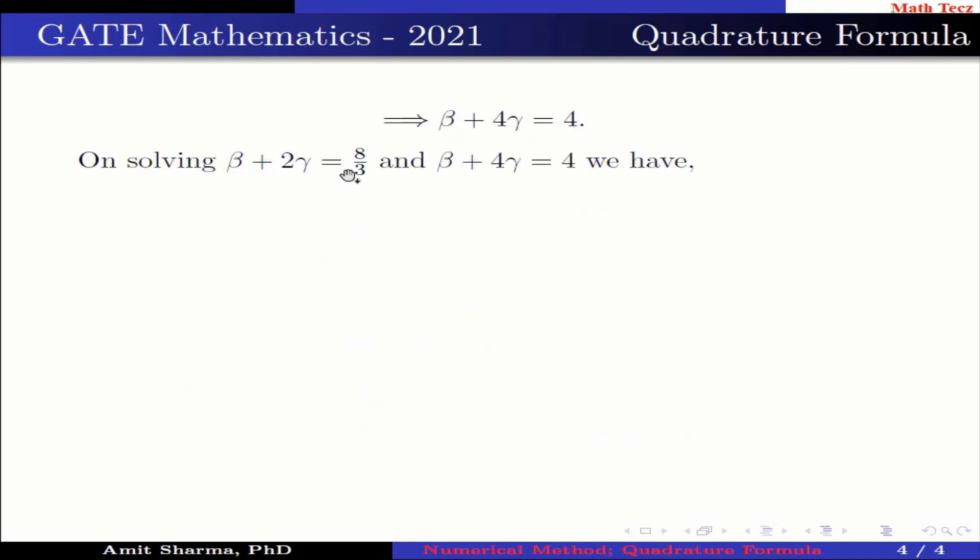On solving β plus 2γ equals 8 by 3 and β plus 4γ equals 4, we have β is 4 by 3 and γ is 2 by 3.